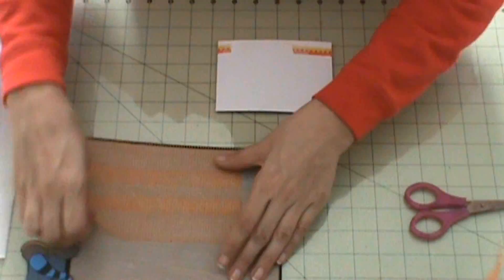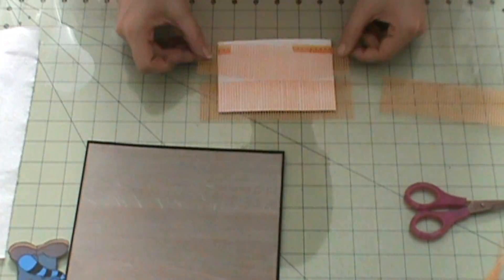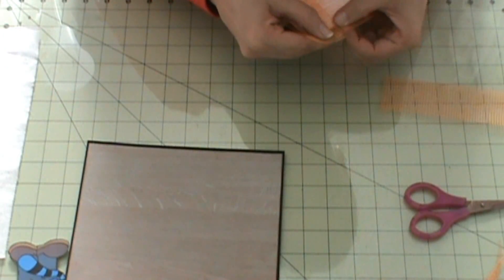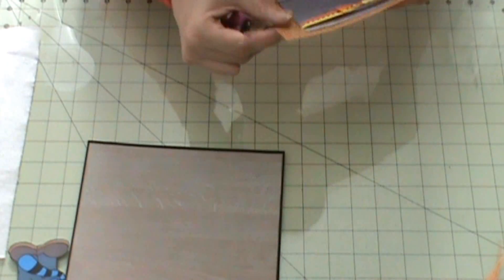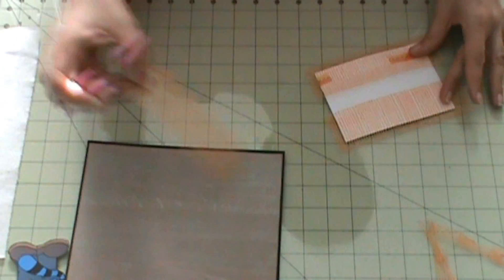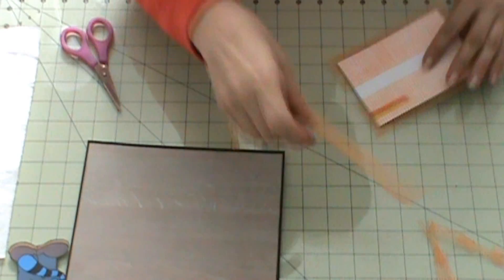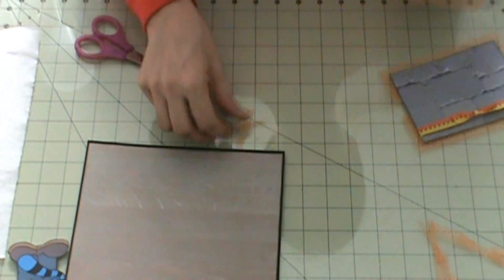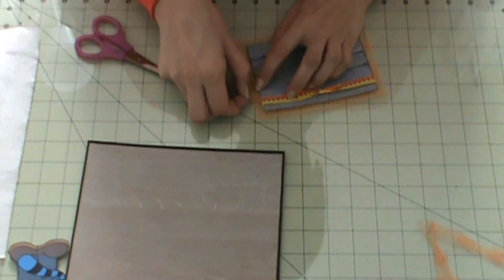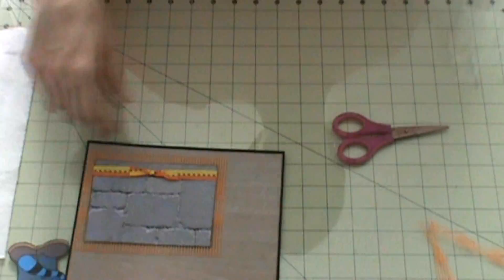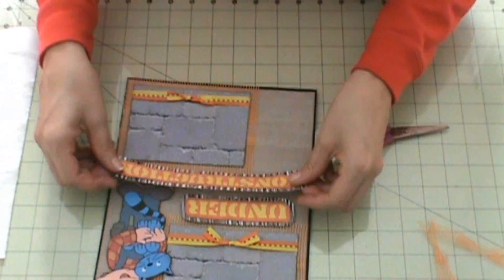And the photo mats are five and a quarter by three and three quarters. Sorry, it's five and a quarter. Five and a quarter. Oh, I need to get something done on my photo mat.